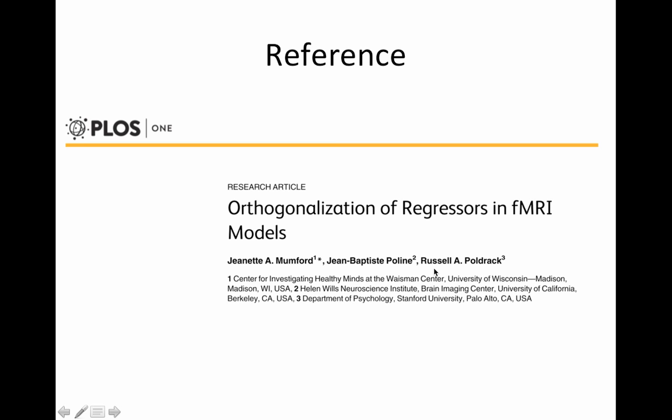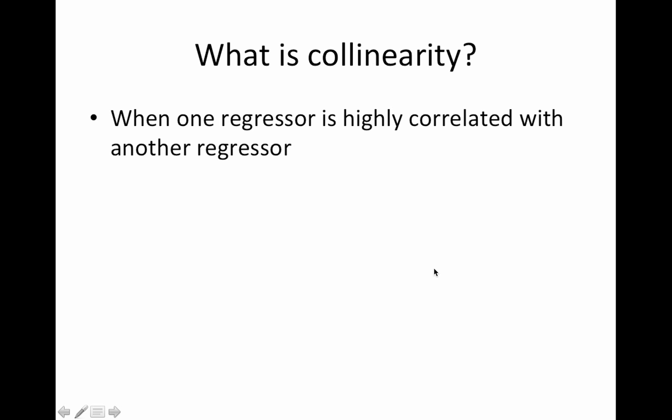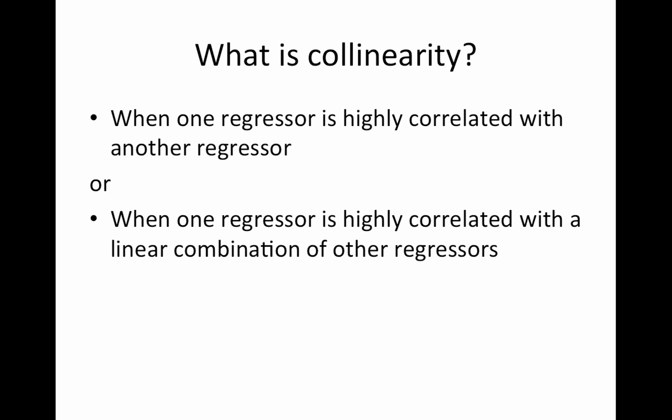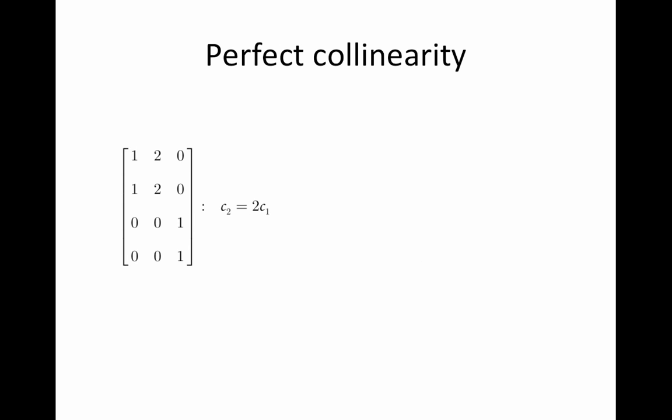What is collinearity? We've talked about this before, but just a refresher. It's when one regressor is highly correlated with another regressor, or when one regressor is highly correlated with a linear combination of other regressors. What's a linear combination?